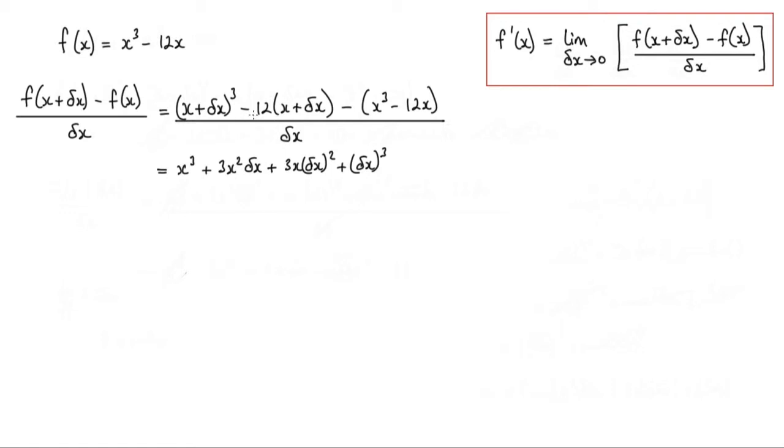This bracket here would have a negative 12x. That's a minus 12x there. Then minus 12 delta x. And I expand this bracket and have a negative x cubed here. And then a negative times a negative is a positive. And I've got the 12x. And of course all of that is over delta x.